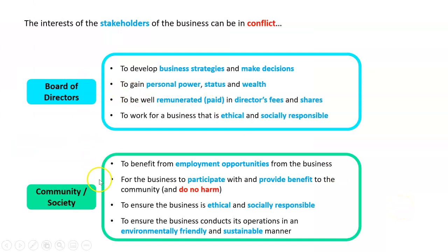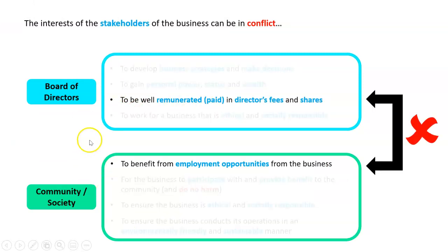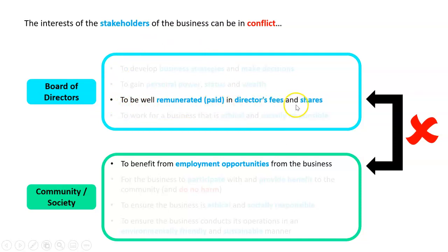Another example: the board of directors and the local community and society — a big conflict between these. Board of directors want to be well remunerated with director fees and shares, whereas the local community wants to benefit from local employment opportunities. A lot of board of directors get incentives if the business makes high profits. One way to lower costs, particularly if you're an Australian business, is to close your Australian factory and move it overseas to China, Vietnam, or Cambodia. The board of directors are going to be well remunerated for lowering costs, but the local community is going to be very unhappy because all those jobs are gone.